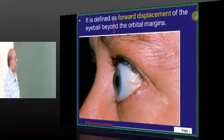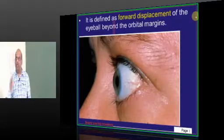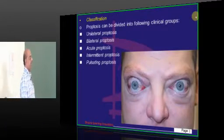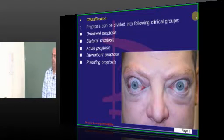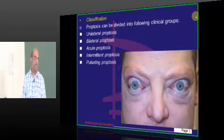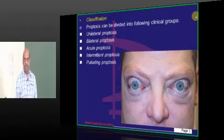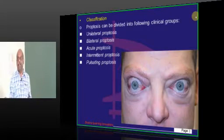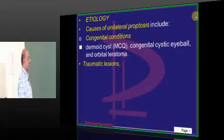Proptosis is that forward displacement of the eyeball beyond the orbital margin, as all of you know. Broadly we divide it into unilateral, bilateral, acute, intermittent, or pulsating. That is how clinically we can be able to divide it.